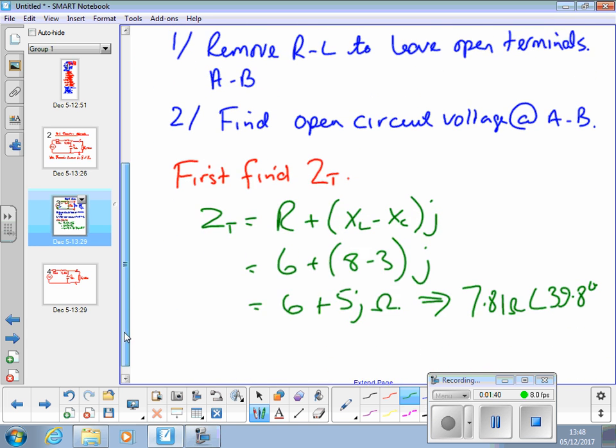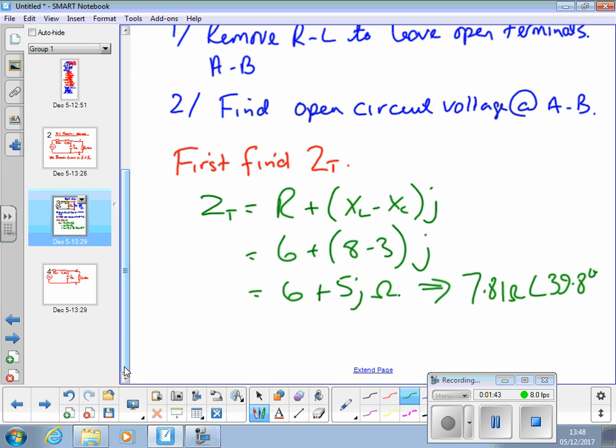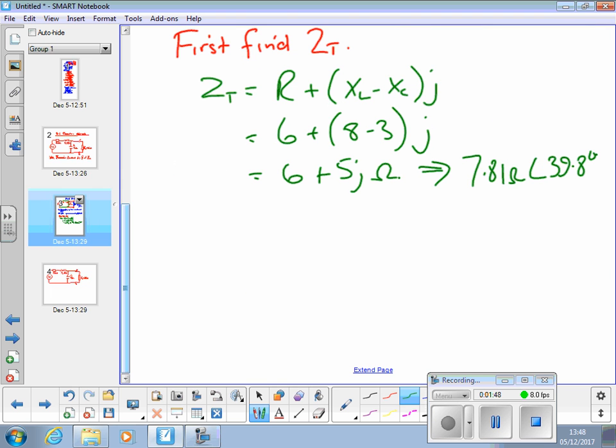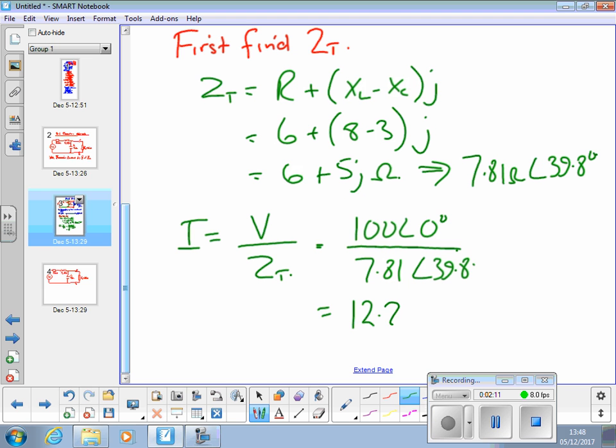Leave the resistor in and you start to think you've got a parallel circuit in there that doesn't exist in this part of the problem. We can then calculate I from V over ZT, 100 angle zero, divided by our 7.81 angle 39.8, gives us a current of 12.8 amps angle minus 39.8 degrees.